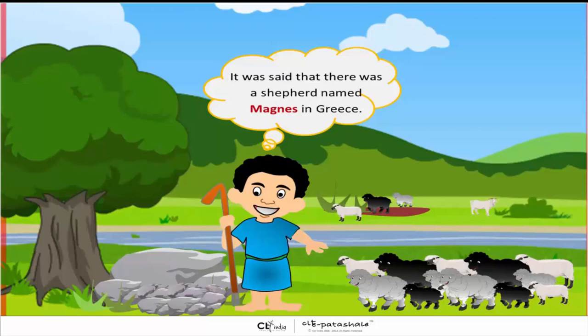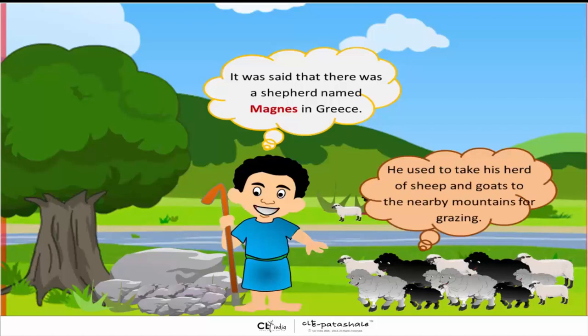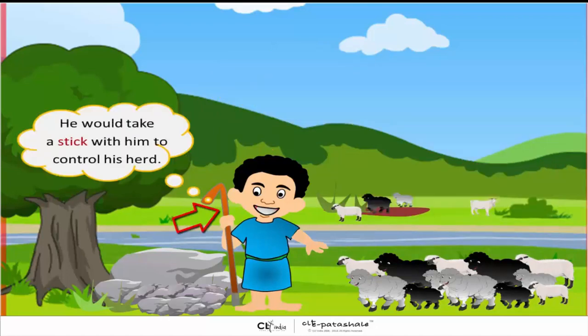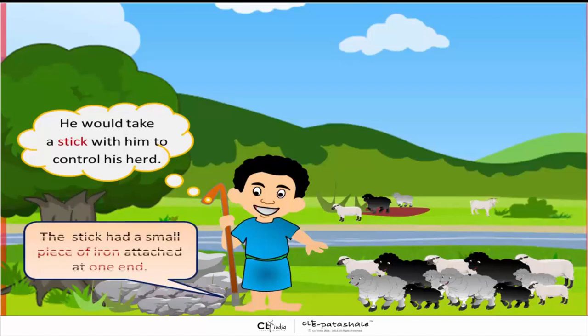It was said that there was a shepherd named Magnus in Greece. He used to take his herd of sheep and goats to the nearby mountains for grazing. He would take a stick with him to control his herd. The stick had a small piece of iron attached to one end.